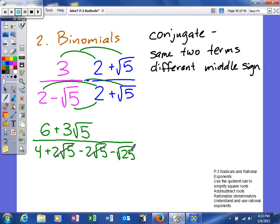And then this is actually a perfect square. So we can simplify it. The square root of 25 is 5. So what we have left is 4 minus 5. So our denominator will be negative 1.